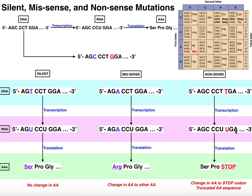Now what do each of these codons encode? AGC — that was serine, so the first codon encodes serine. CCU — that encodes proline, so the second codon encodes proline. In the wild type, or normal healthy version of this gene, the third codon GGA encoded glycine. But now we have UGA — and UGA is a stop codon. So now there could have been potentially 100, 300, even 500 other amino acids that came after this glycine.